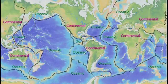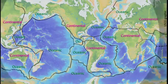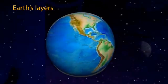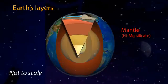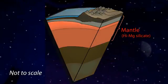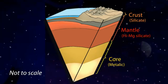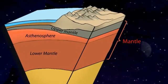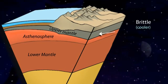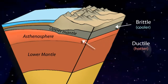We will return to lithosphere types in a minute, but first let's look inside the Earth to clarify the layers. The mantle is a 2900 kilometer thick, high magnesium silicate rock layer located between the crust and the core. The uppermost part, the lithospheric mantle, is cooler and more rigid than the deeper mantle. It lies above a hotter and more ductile layer of similar composition called the asthenosphere.